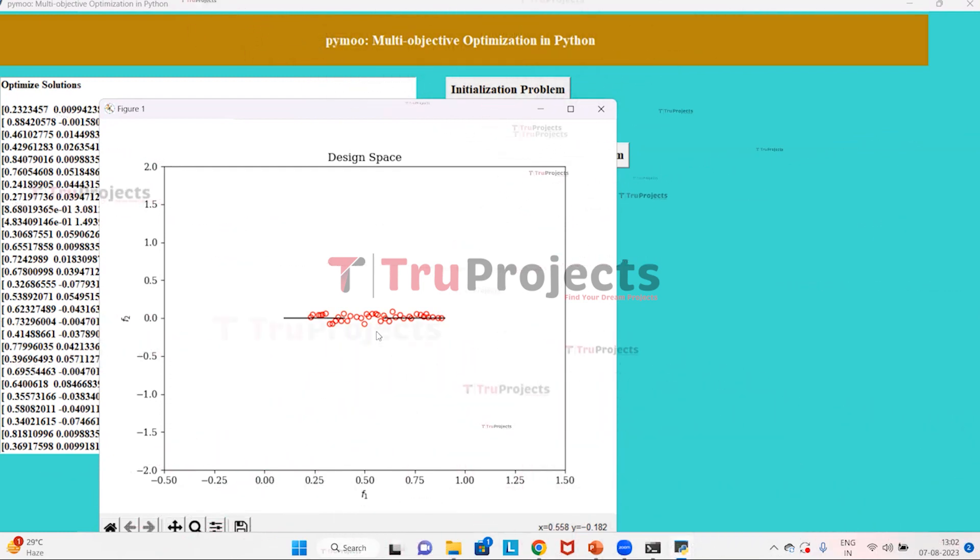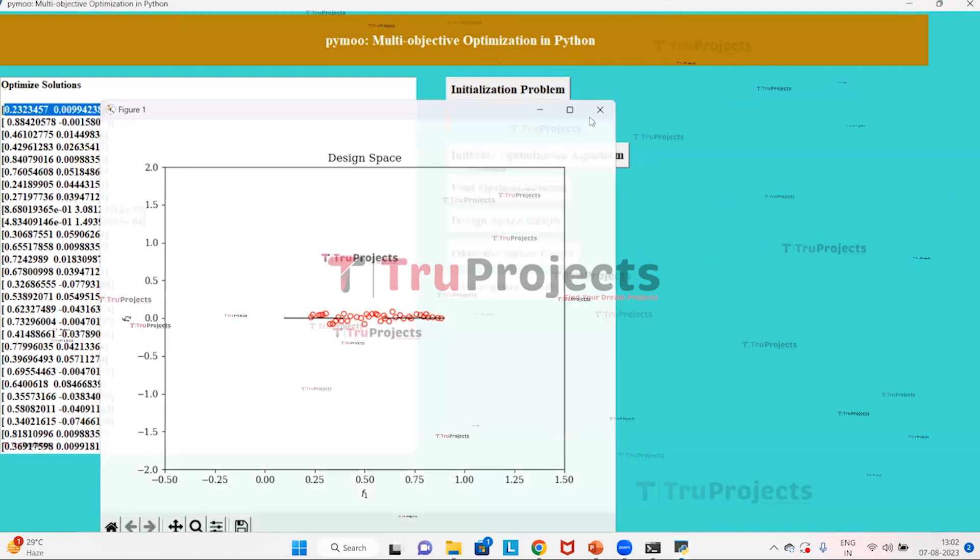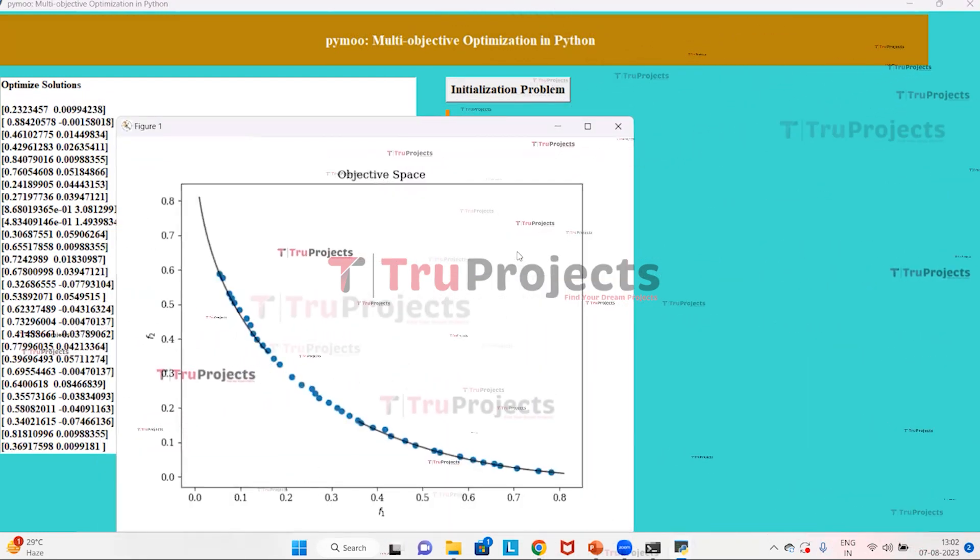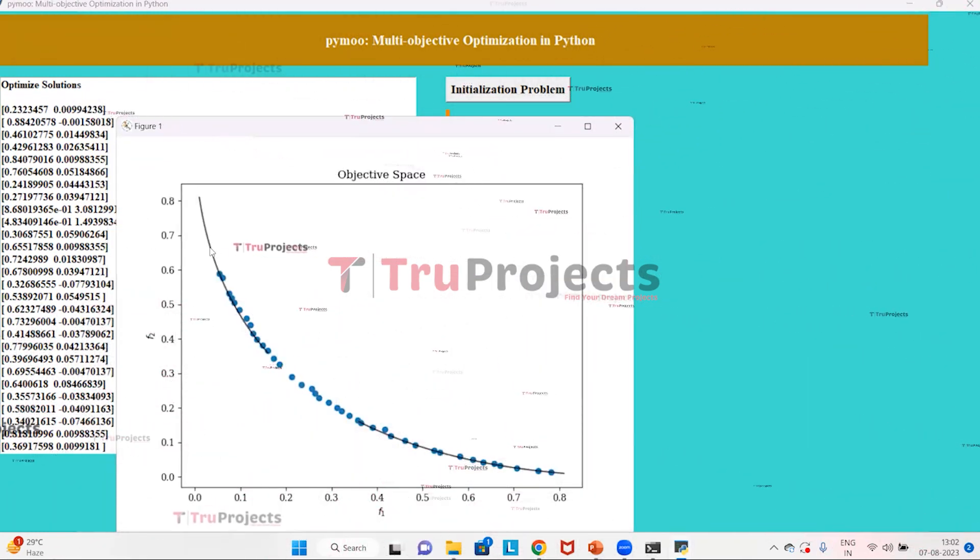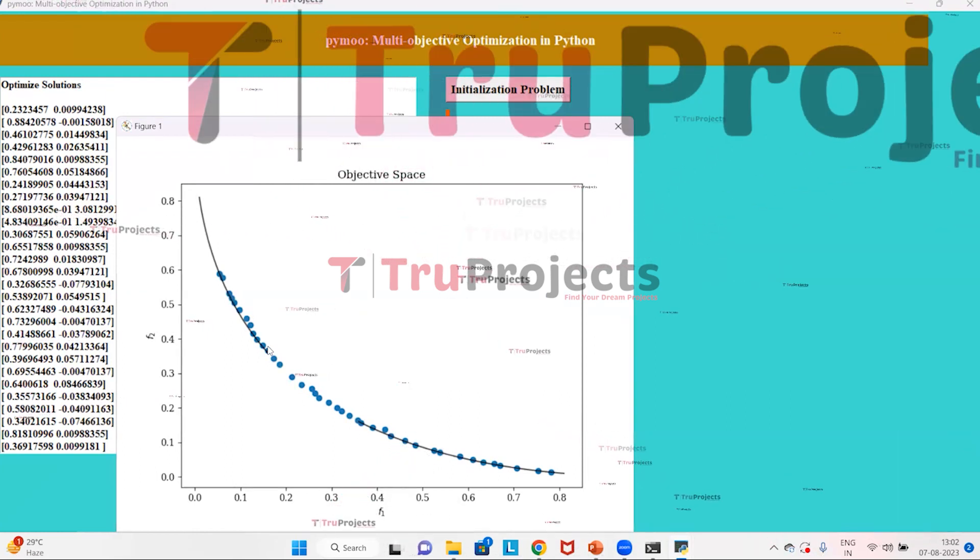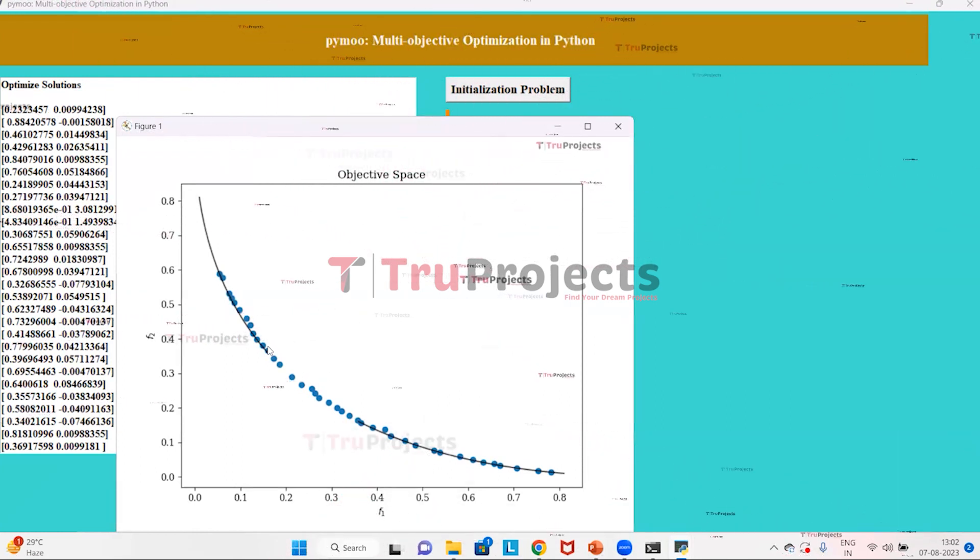Now click on the objective space graph button to get the objective value at each iteration. Here, the black line represents the optimal solution which is close to zero as our objective function. In the graph, small circles represent the values obtained from the algorithm, and the black line on small circles represents optimal values which are close to zero.